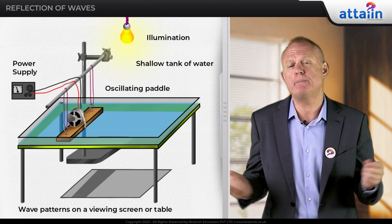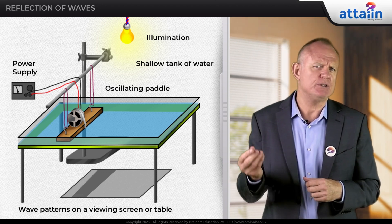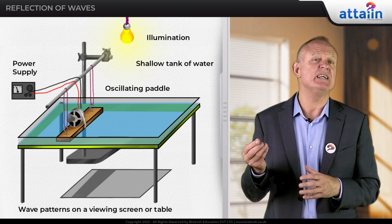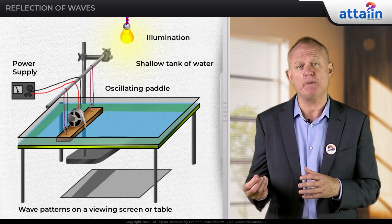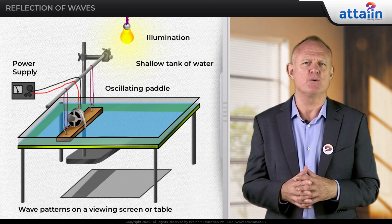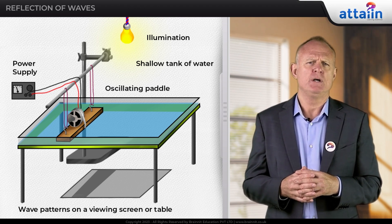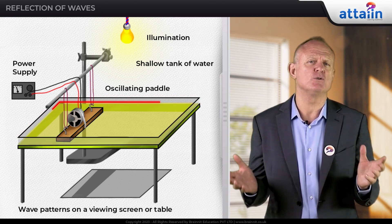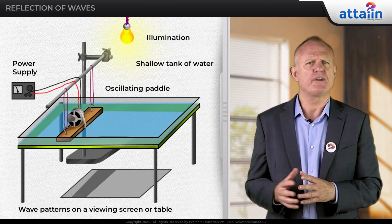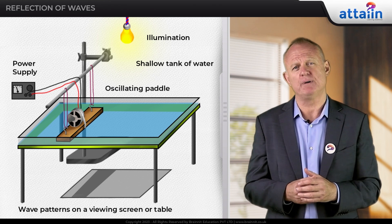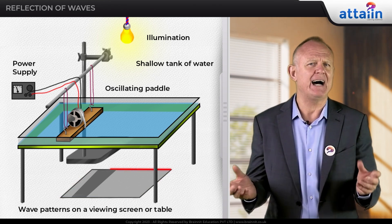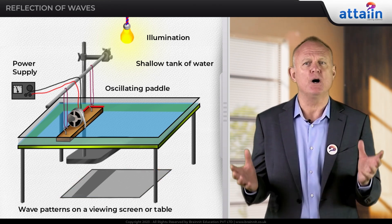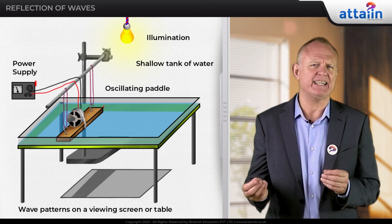What is a ripple tank? It's a machine we can use to generate waves in water and observe different phenomena. The tank is made of glass and filled with water. There is a light source on the top and a screen at the bottom.